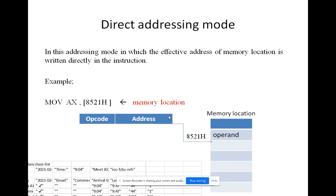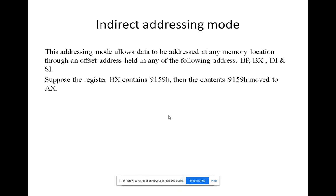Direct addressing mode: in this addressing mode, the effective address of the memory location is written directly in the instruction. For example, MOV AX, [8521H] — the data at memory location 8521H will be moved to the AX register.